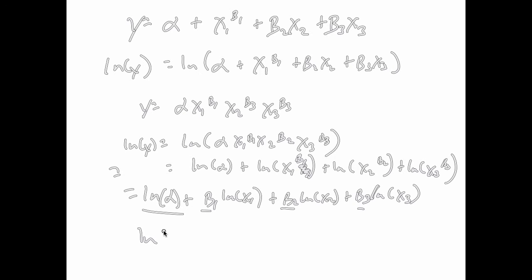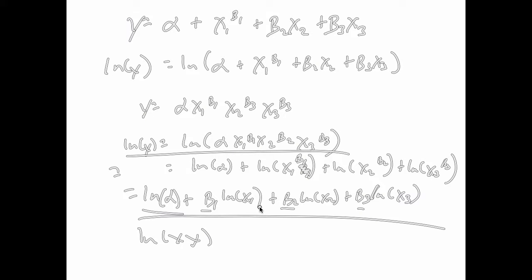We use these two log rules, and that's useful because we know how to regress and analyze a model like this — we don't know as well how to analyze statistically a model like the original multiplicative form. So this is a convenient transformation to use to be able to analyze our models.